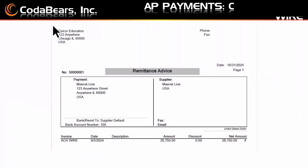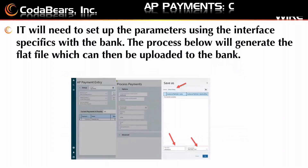This is what the remittance advice looks like out of the box. Just like you can send electronic information such as an invoice to your suppliers, this can be set up to be sent automatically to your supplier when you do an ACH or a wire. IT will need to set up the parameters using the interface specifics. We're not going to go into the interface and the flat file here — IT will understand what a flat file is. You'll get the specifications from your bank, which may differ based on whether you're sending a wire or an ACH. You'll have to work with your bank until the flat file works for their upload, as every bank has different specifications, but there is a default in the system that IT can use to start the process.